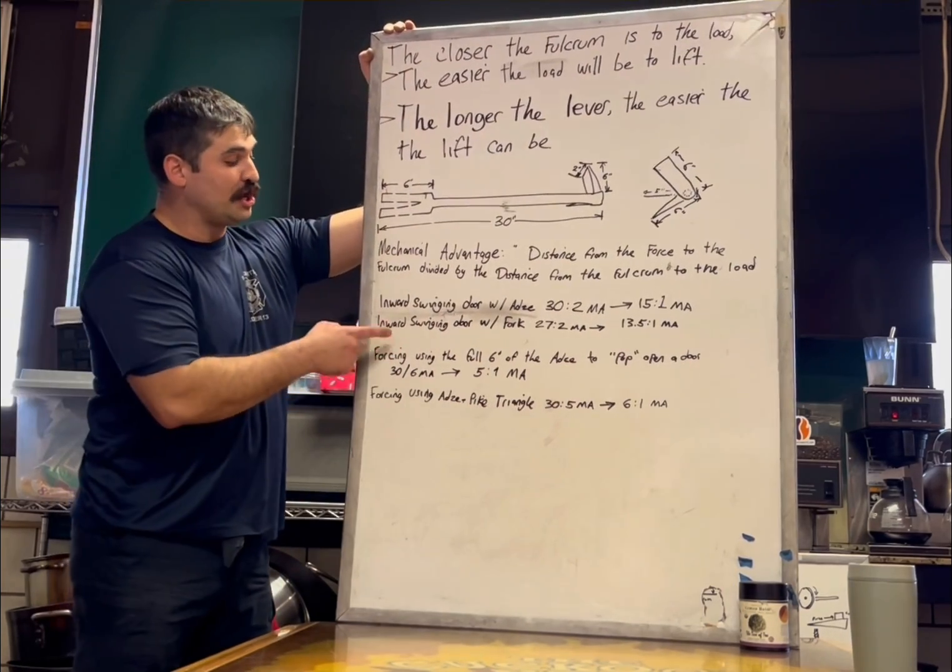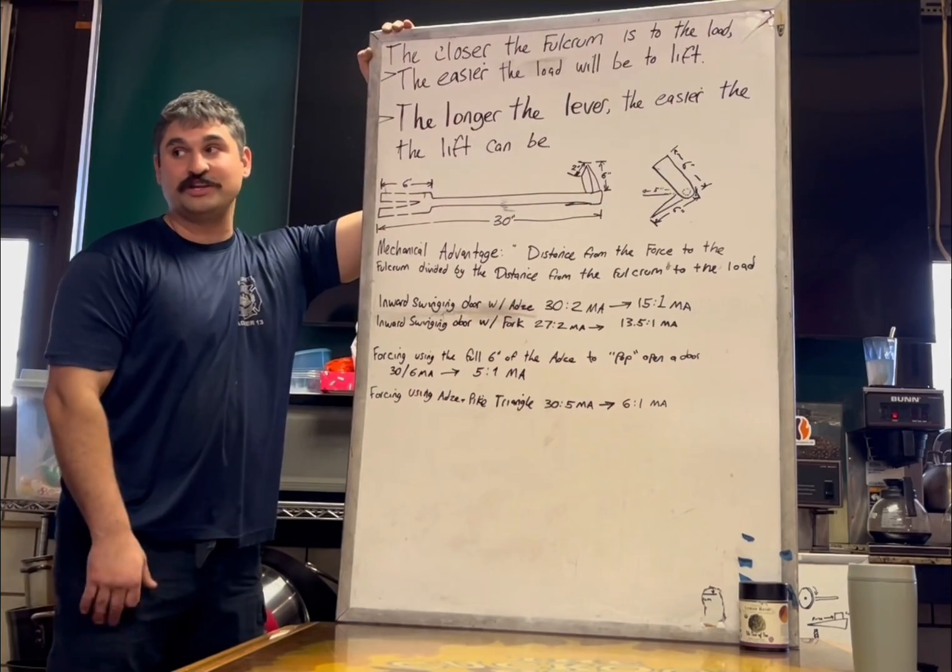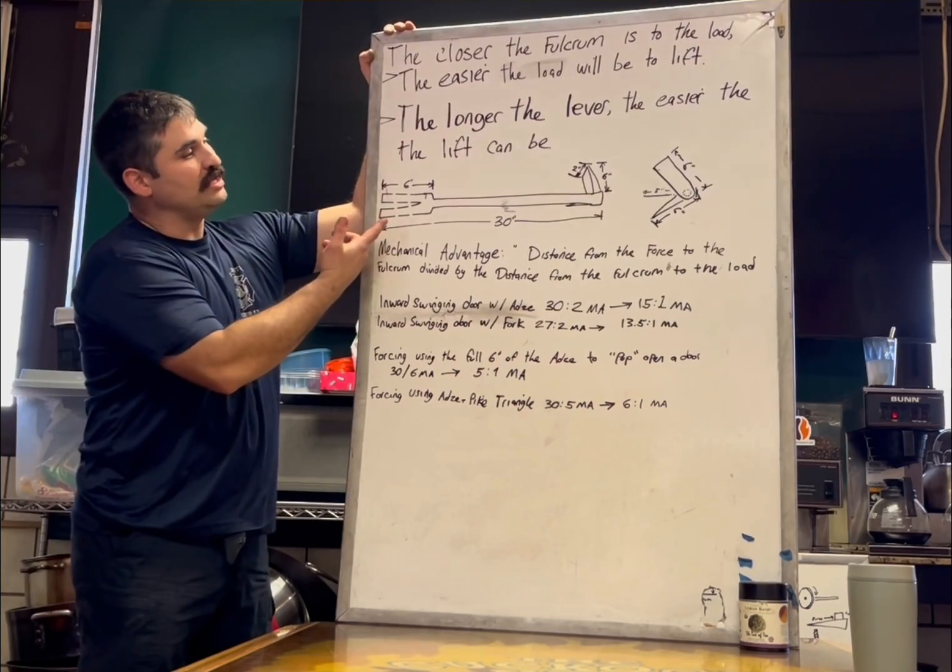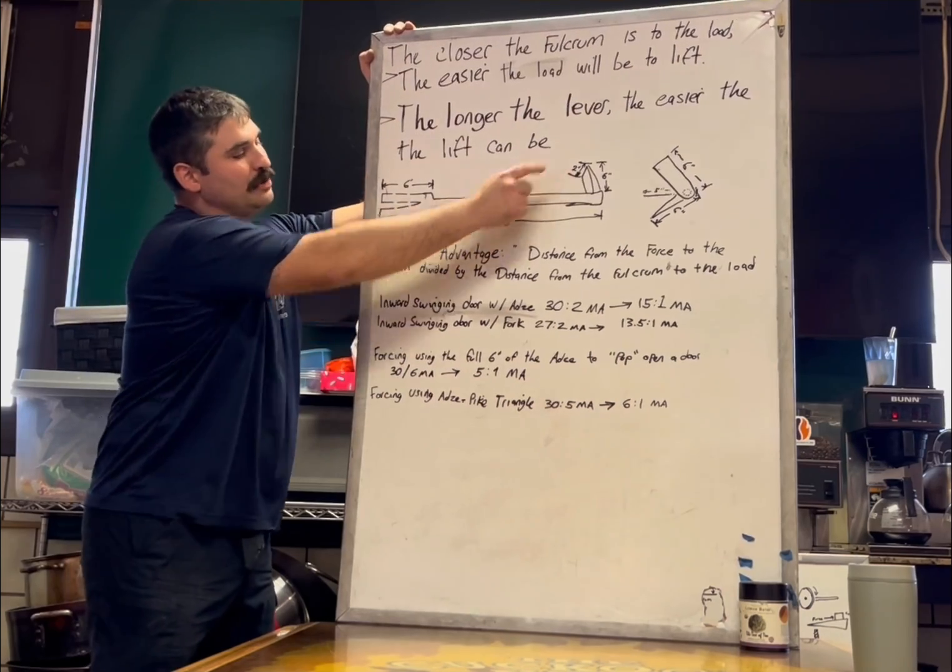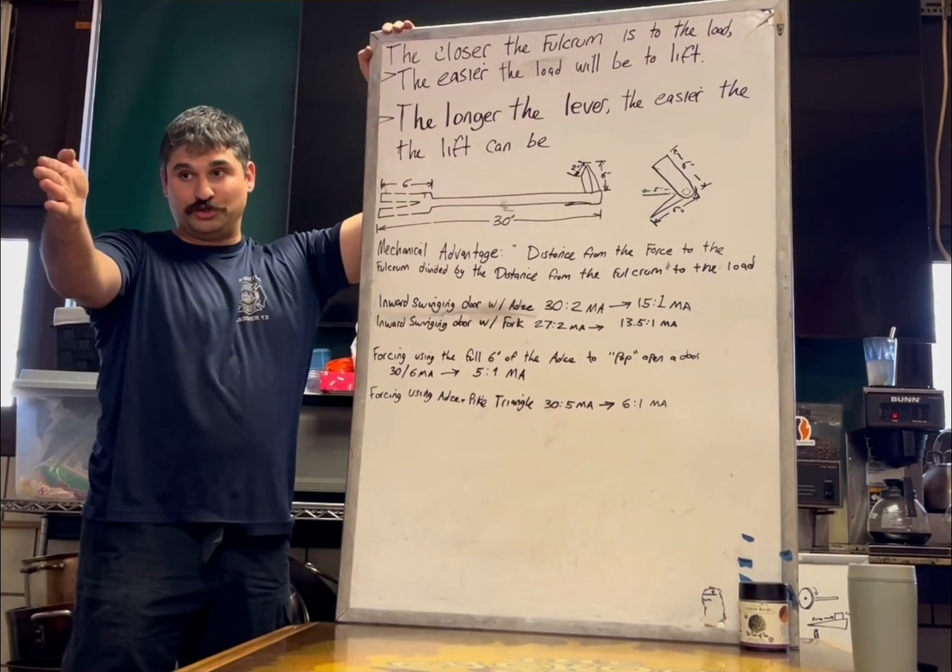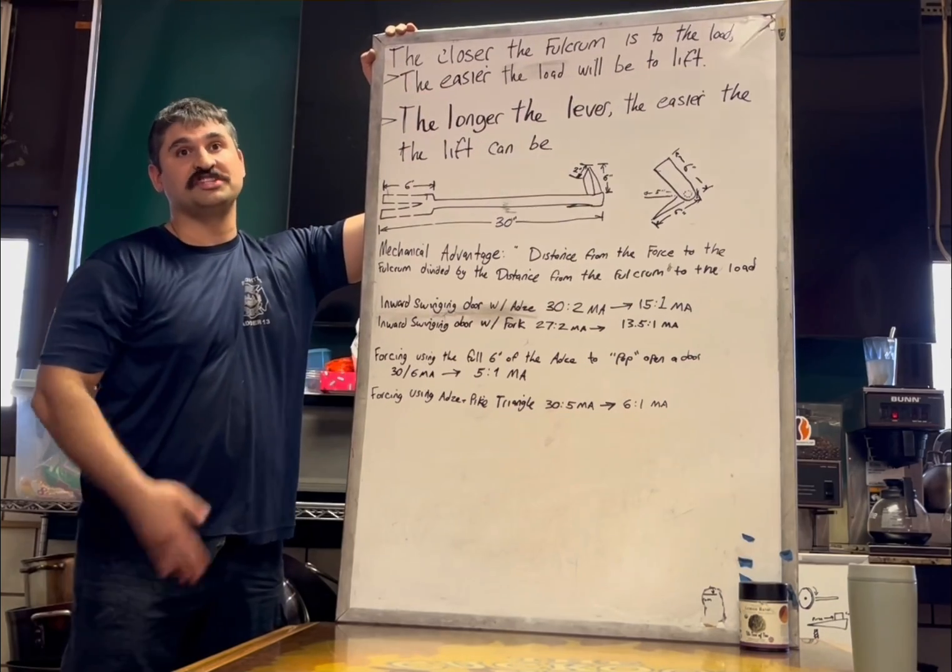You don't need to know the numbers, you just need to know that the adze is the number one, that has the most mechanical advantage we can generate with the tool. Using the fork is a little bit less. Your attacking with the adze is going to be a sure thing if you remember to crank it sideways for the two inches versus trying to pry against the whole six inches of the adze.